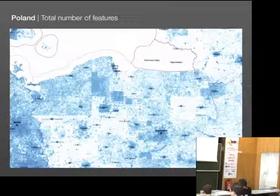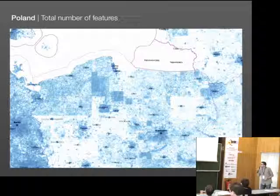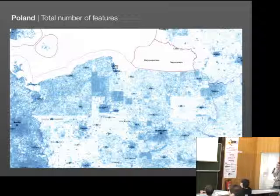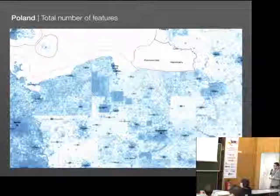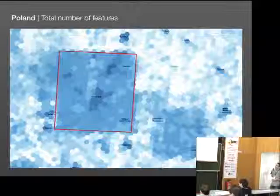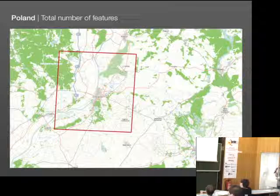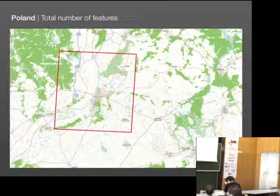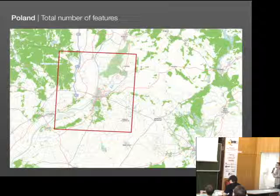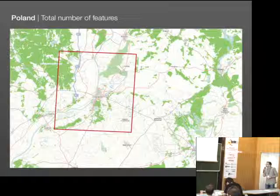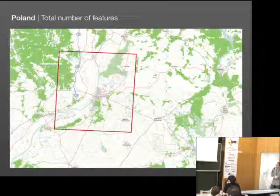Another very interesting example is Poland. This is the total number of features displayed, and we identified some rectangular patterns here in the north. If we have a closer look at one of these patterns and compare it to the visualization of Mapnik, we can see that at this border the density of the street network is very low compared to the rectangular pattern. We can identify areas which have an increased need for quality control and more mapping activity.